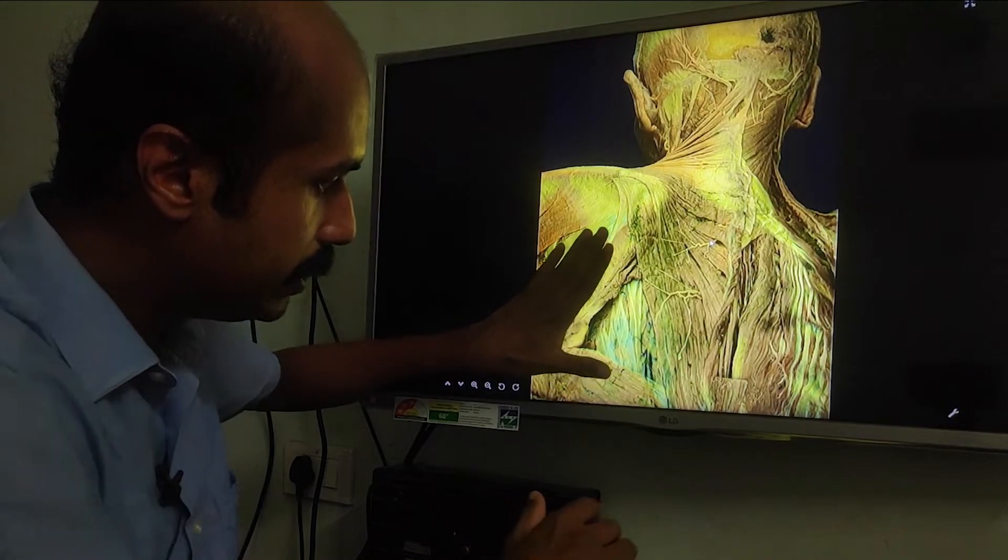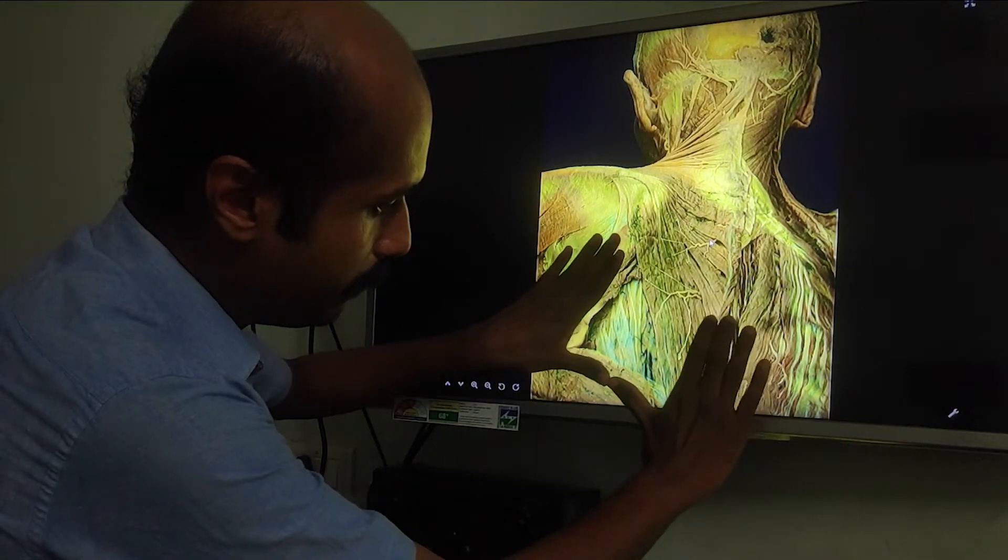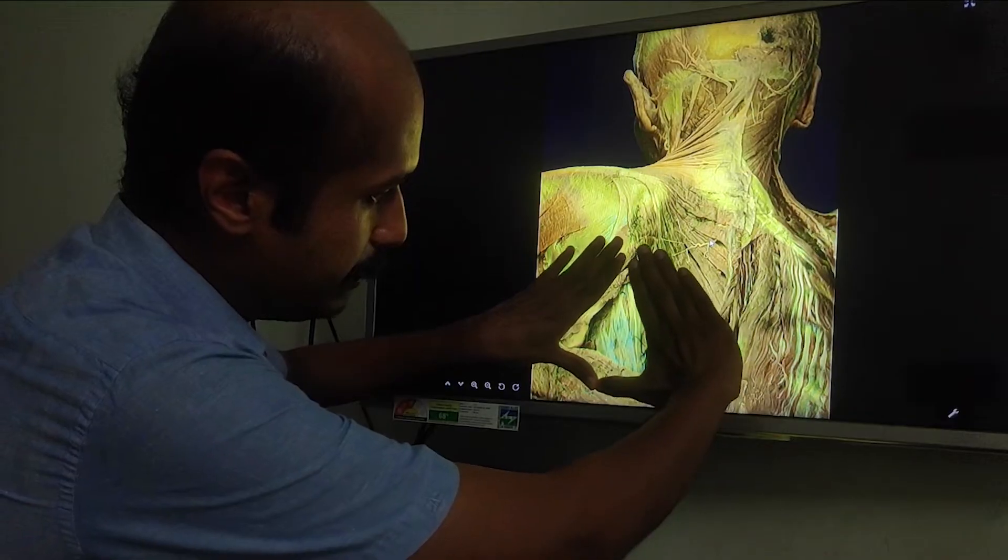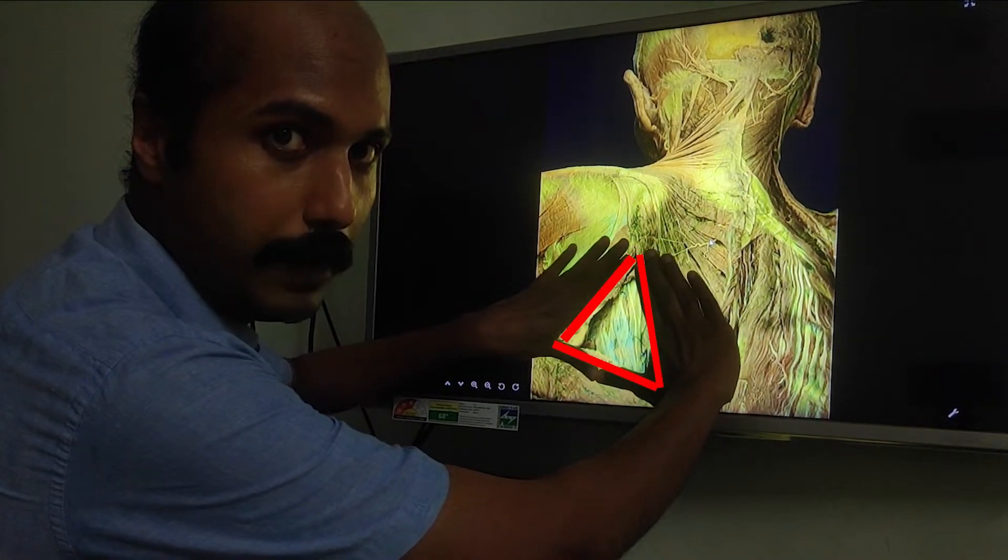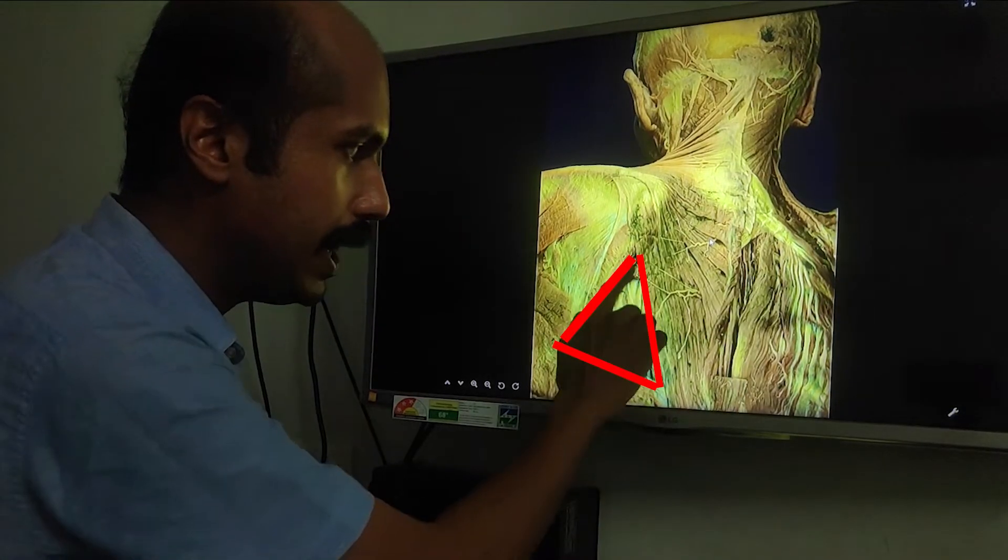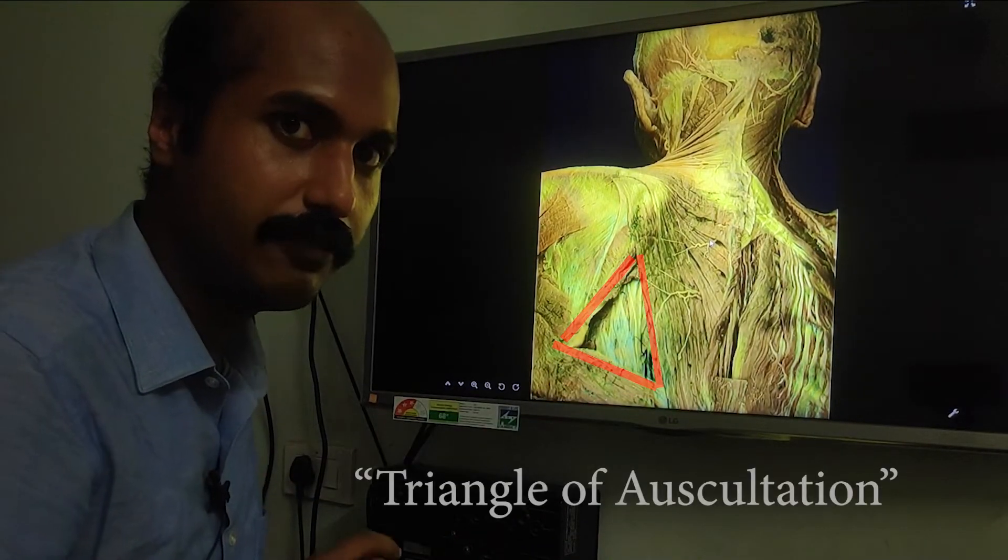The medial border of the scapula, the latissimus dorsi, and the trapezius which is ascending up forms a triangular opening. This triangular window is called the triangle of auscultation.